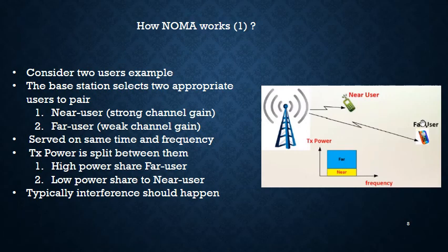Let's talk about how NOMA works. We have two users: one is close to the base station — the near user — and one is far from the base station — the far user. Both are selected carefully such that there is enough distance between them. The near user has strong channel gain, while the far user has weak channel gain.